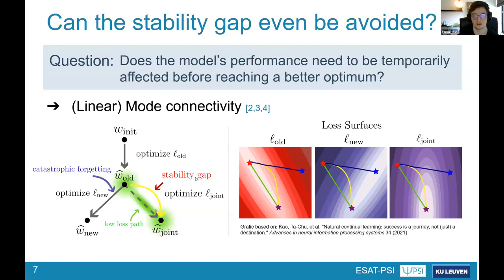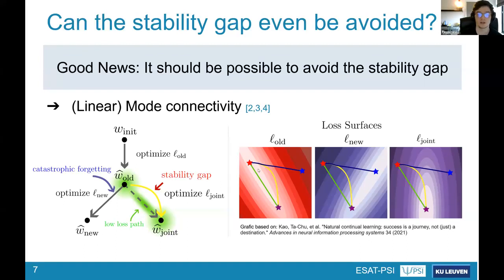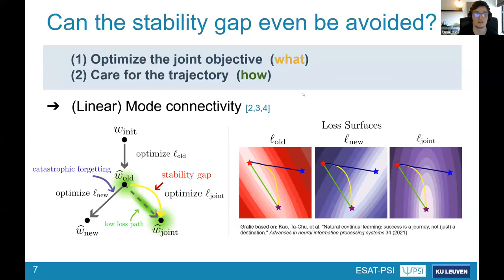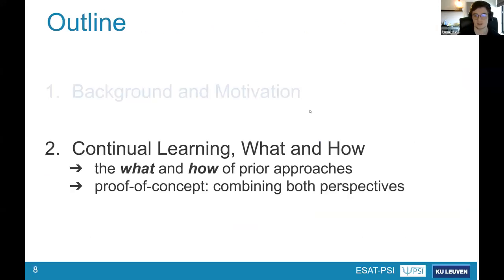One reason is that the low-loss region is not necessarily aligned with the steepest gradient, so taking the steepest gradient with respect to new data leads you transiently outside of this low-loss vicinity. The good news is that it should be possible to avoid the stability gap if we could follow this low-loss path. So the two perspectives are: we need to care about where we optimize toward, but also about how we optimize toward the joint loss.